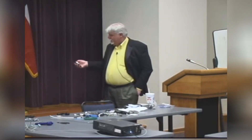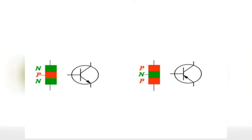When we look at our drawings of transistors, notice this is an NPN transistor — see the arrow? This is a PNP. NPN: negative, positive, negative. PNP: positive, negative, positive. How do I remember that on my schematic diagram? That's a not-pointing-in transistor. This is a pointing-in transistor. If it's not pointing in, it's an NPN. If it's pointing in, it's a PNP.